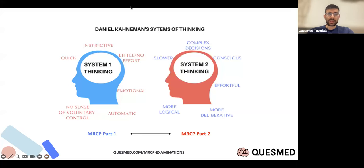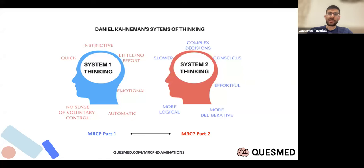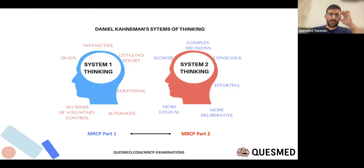To start the lecture, the way I think of MRCP part one and two is that part one is very much about rote learning, things you've come across, whereas part two is more about logical thinking and understanding rather than just memorization. This is from a book called Thinking Fast and Slow. I've pinpointed certain things as very part one or very part two, so you can get an idea of what this is pitched at depending on the exam you're revising.